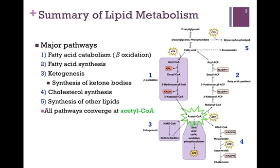Let's now summarize the different lipid pathways that we'll consider in this chapter — that's part of our illustration. First of all, we'll consider fatty acid catabolism, also referred to as beta-oxidation, and that's indicated by the number 1.